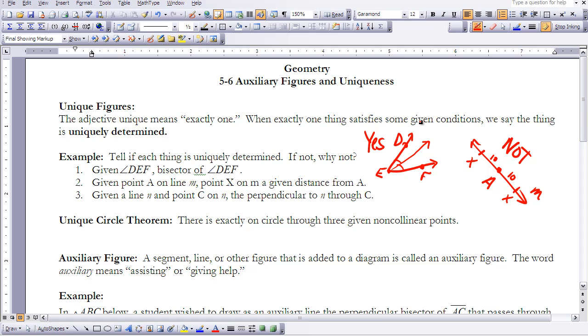Let's take a look at the last one. Given a line N and point C on N, the perpendicular to N through C. So what that's trying to say is I have a line N and point C and the perpendicular to N. So if I'm going to be perpendicular that means I have to go through it 90 degrees. So there's only one place for that to happen. So that means that yes, this is uniquely determined.